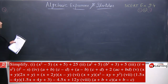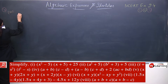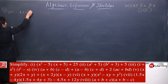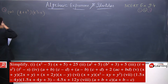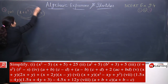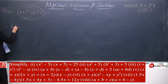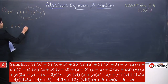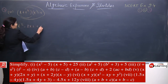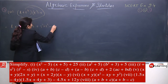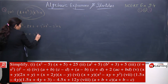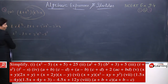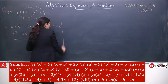Now third is: t plus s square, and t square minus s. This is also very simple. The method is: multiply this with both terms and multiply this with both terms. t into t square minus p into s plus s square into t square minus s square into s. It will give you t cube minus ts plus s square t square minus s cube. There are no like terms, so this small multiplication is done.